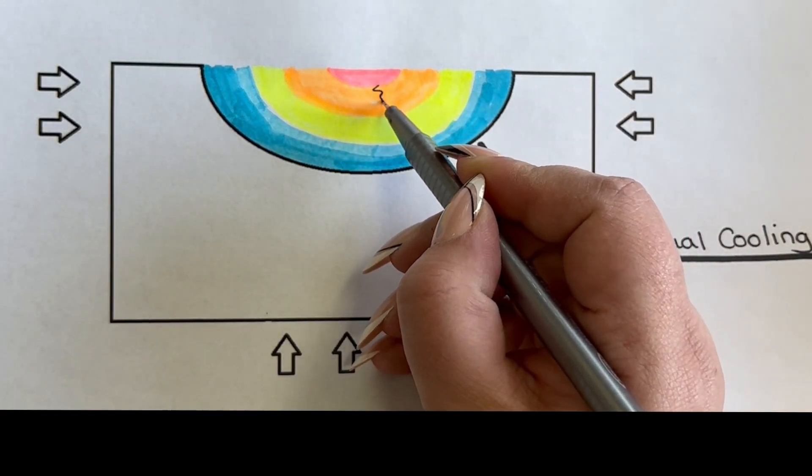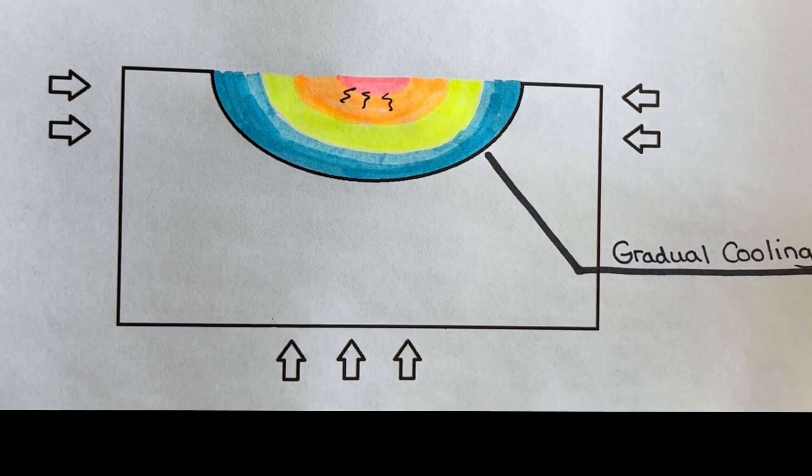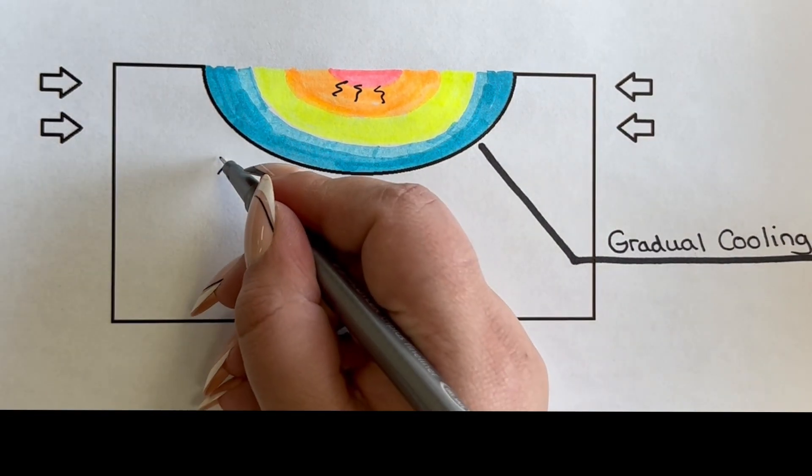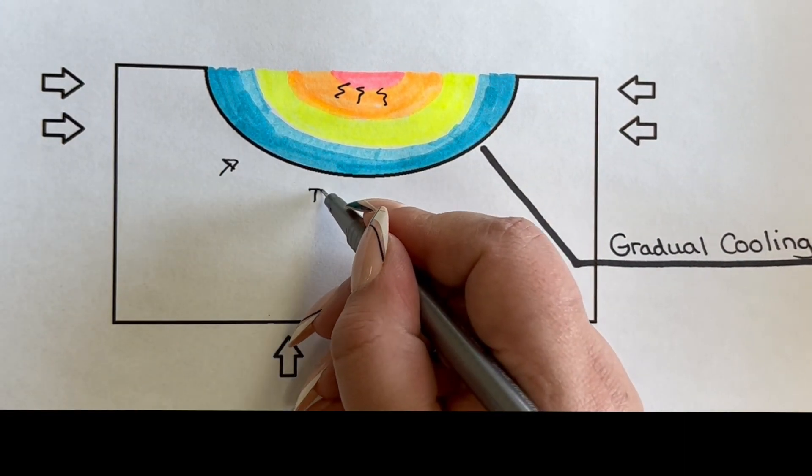As a weld goes from liquid to a solid it literally shrinks. This is what creates the pull that can be felt when a piece is held in position while it is welded.